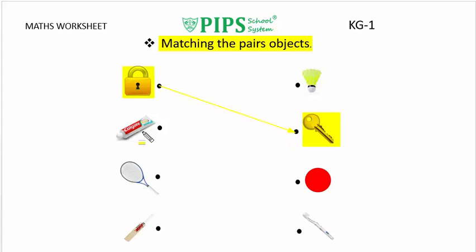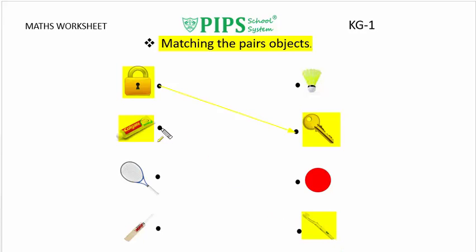The next object is toothpaste. Its pair is toothbrush. Let us match the toothpaste with its pair like this. The third object is racket.